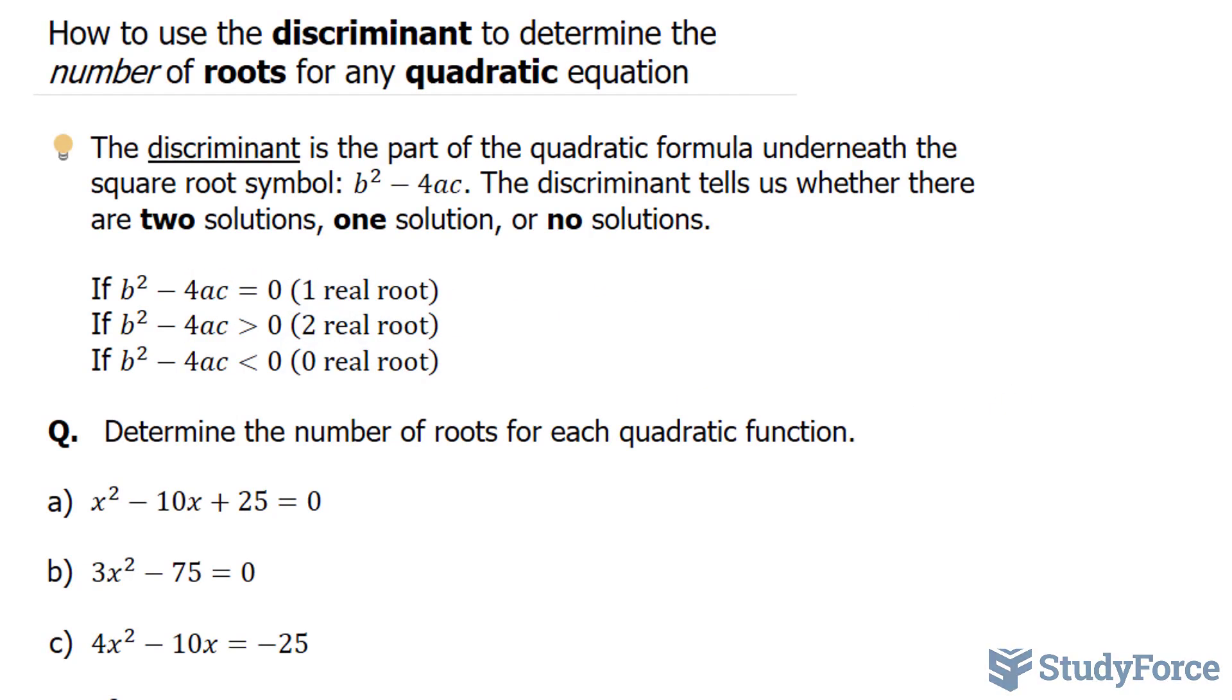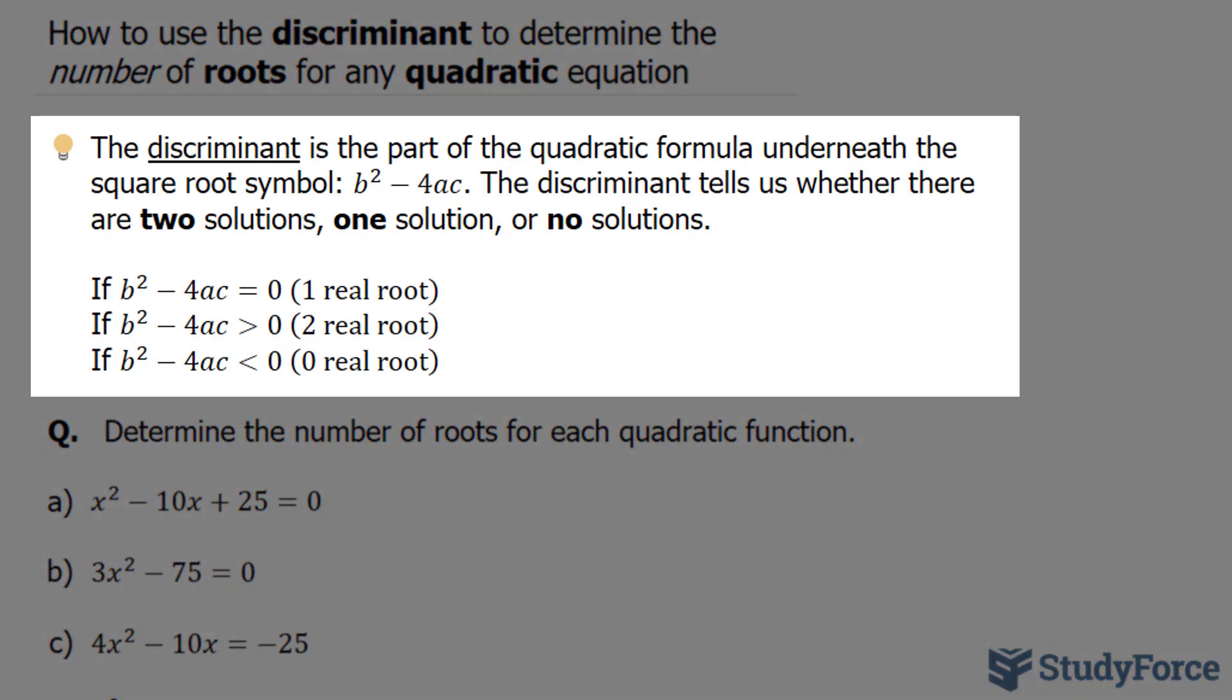In this video, I'll show you how to use the discriminant to determine the number of roots for any quadratic equation. The discriminant is the part of the quadratic formula underneath the square root symbol, b squared minus 4ac.